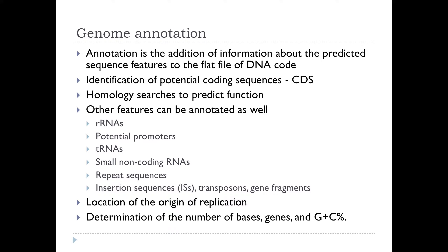Once we've got contiguous sequences — called contigs — we want to annotate the sequence features within them. We're annotating information about the predicted sequence features to that flat file of DNA codes and sequences. One of the key issues is identifying the genes or potential coding sequences (CDSs) and seeing where they sit in the genome, then using homology searches to predict function. There are other features you can annotate as well — tRNA, rRNA — and at the whole-genome level you can locate the origin of replication, count the number of bases and genes, and determine the GC content.